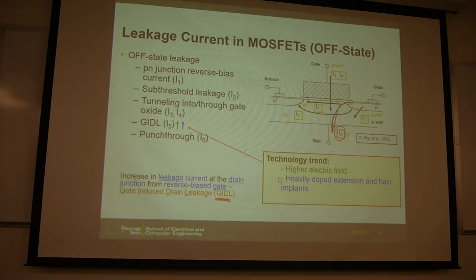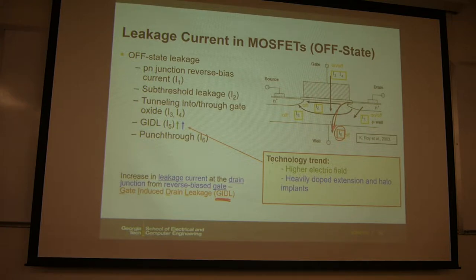The GIDL effect happens at a very high electric field. Also, if your transistor has a heavily doped extension area or halo implantation, you will have an overlap between the gate and the drain. When you have this overlap region, the GIDL effect is significant.